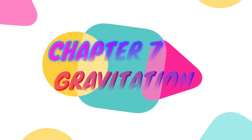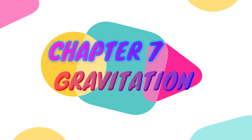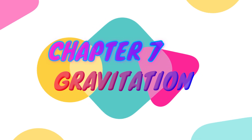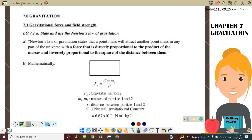Hello, welcome back to my channel. Today we will learn Chapter 7: Gravitation. We will start with 7.1 Gravitational Force. Newton's Law of Gravitation states that a point mass will attract another point mass in any part of the universe with a force that is directly proportional to the product of the masses and inversely proportional to the square of the distance between them.